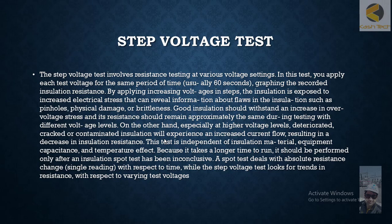A spot test deals with absolute resistive change — a single reading with respect to time — while the step voltage test looks for trends in resistance with respect to varying test voltages. If you are doing the spot test and not getting a satisfactory reading, or the reading is not stable or is coming out low, the next method to check further and get conclusive proof is to do the step voltage test.